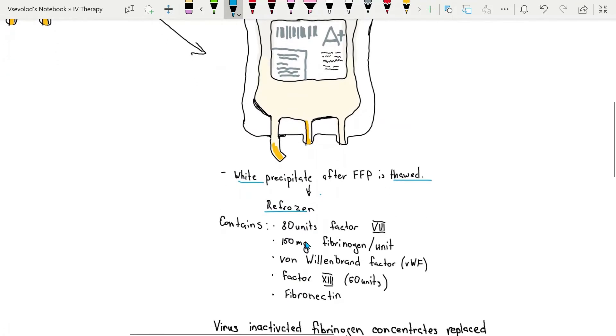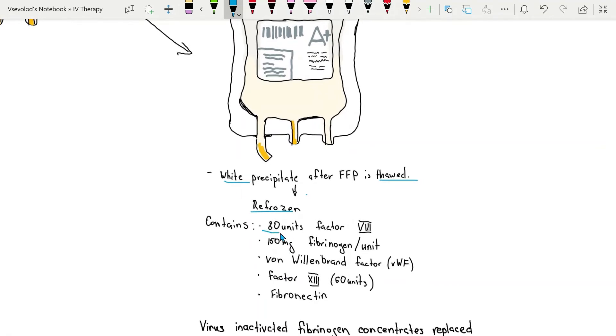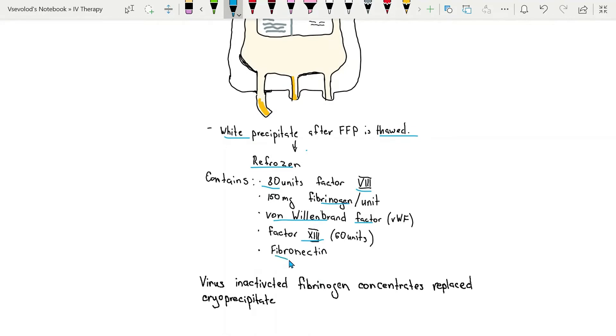Cryoprecipitate contains at least 80 units of Factor VIII, 150 mg of fibrinogen per unit, von Willebrand factor, Factor 13 at about 60 units per bag, and fibronectin.